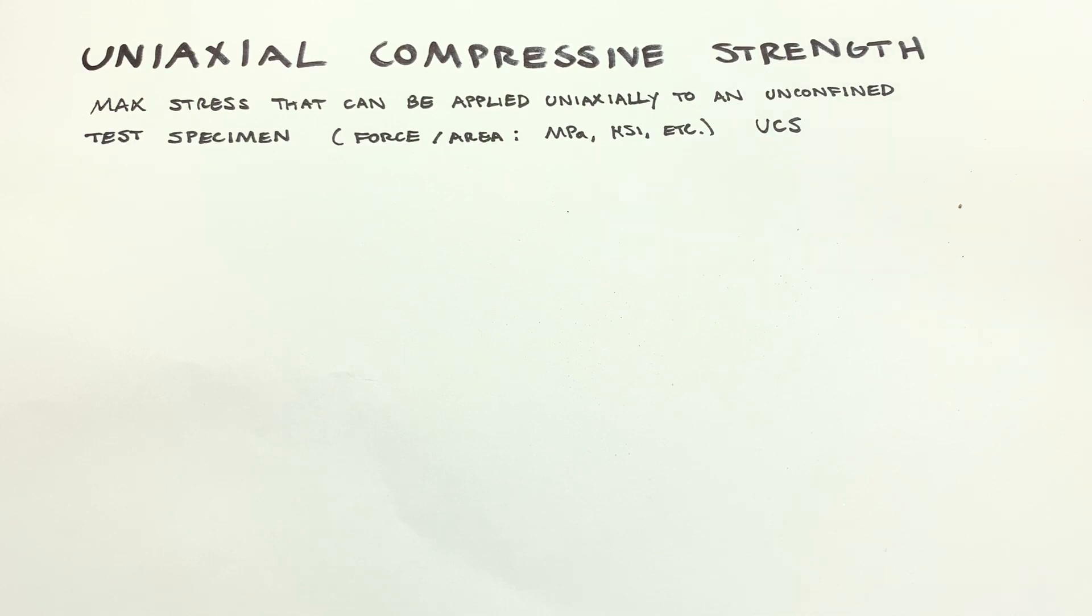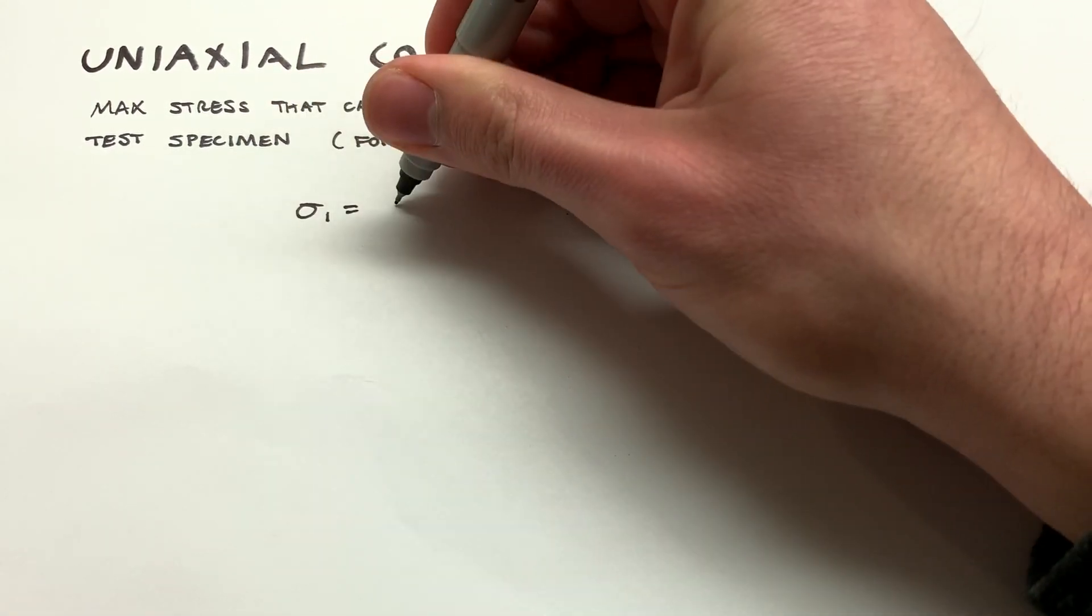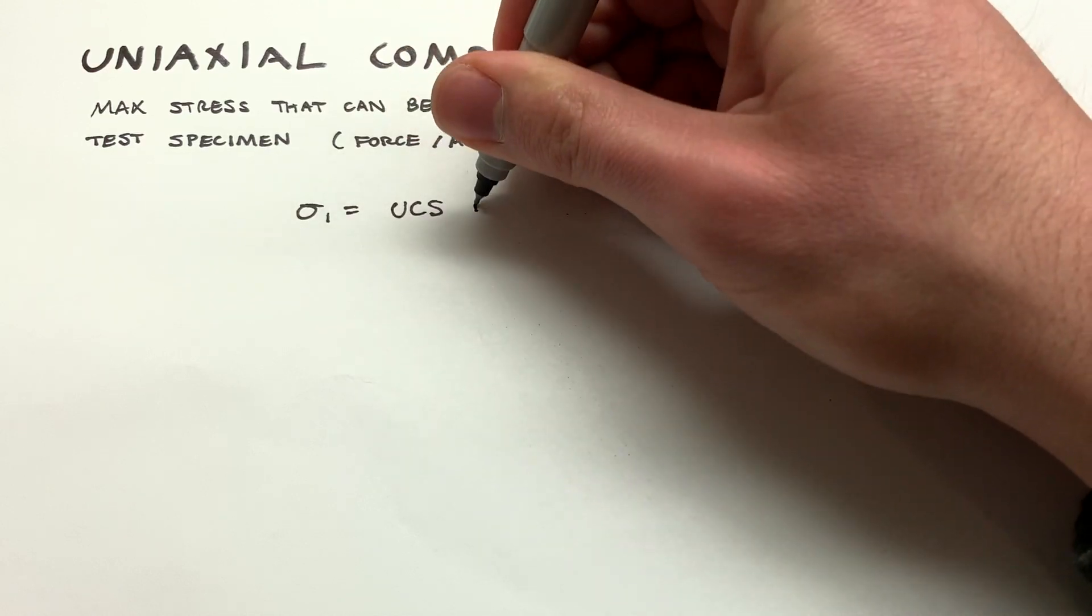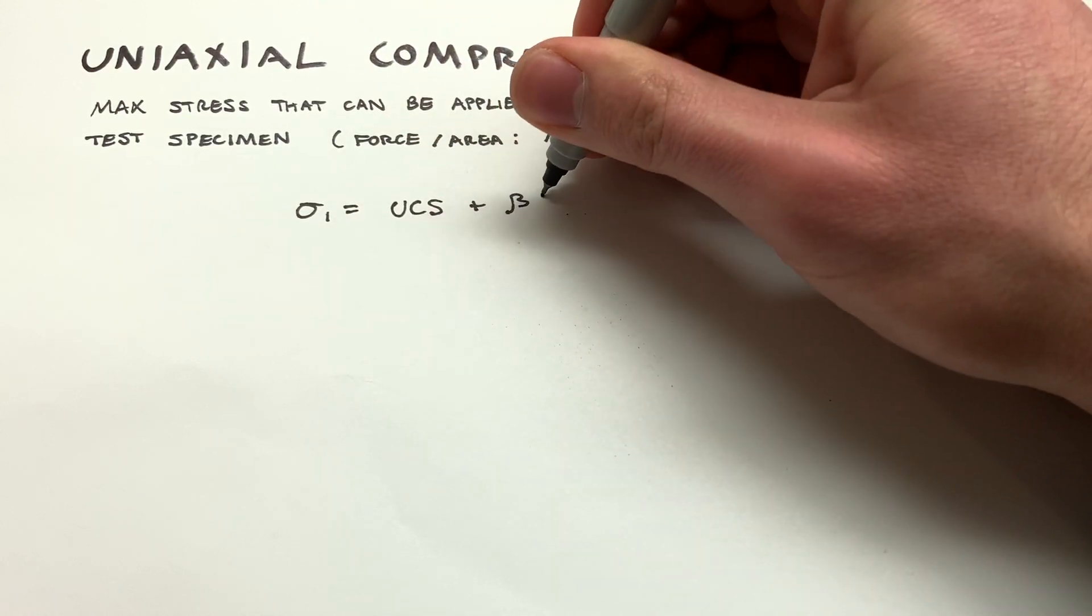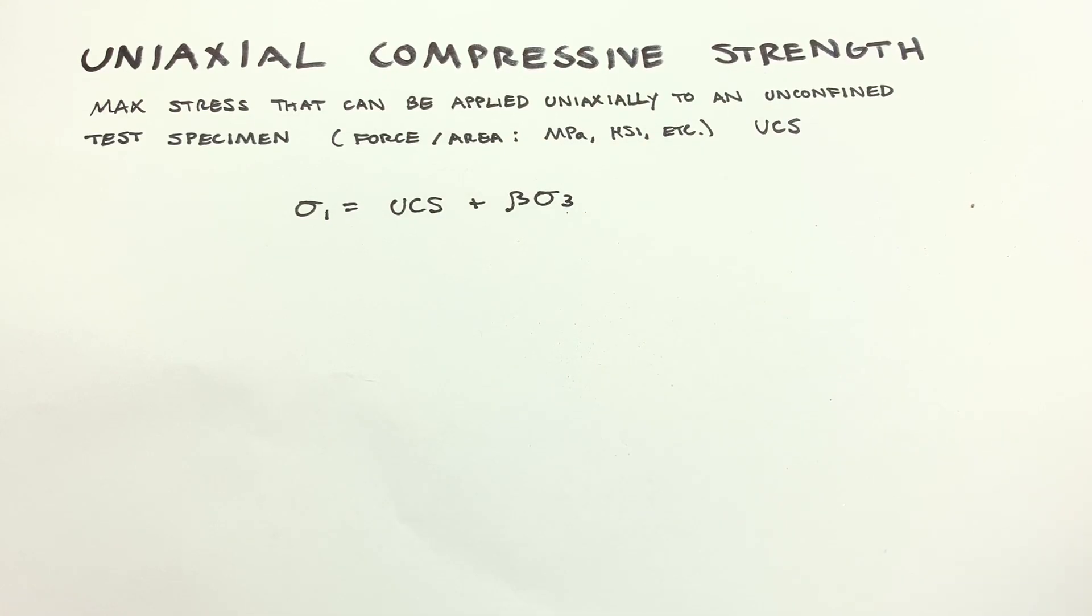The first one that we're going to talk about today is the Moore-Coulomb failure criterion. This is an easy one to use because it gives us an estimation of the failure, and it's a completely linear equation. Sigma 1 is equal to UCS plus beta sigma 3.